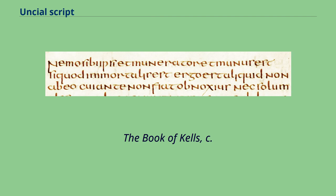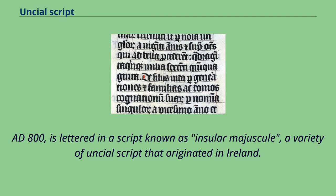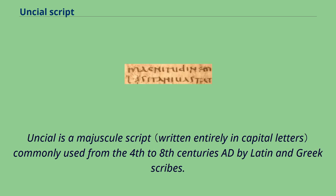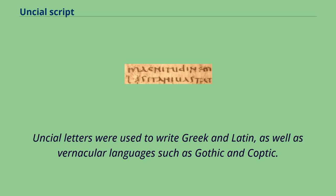The Book of Kells, c. 800, is lettered in a script known as Insular Majuscule, a variety of Uncial script that originated in Ireland. Uncial is a majuscule script commonly used from the 4th to 8th centuries AD by Latin and Greek scribes. Uncial letters were used to write Greek and Latin as well as vernacular languages such as Gothic and Coptic.